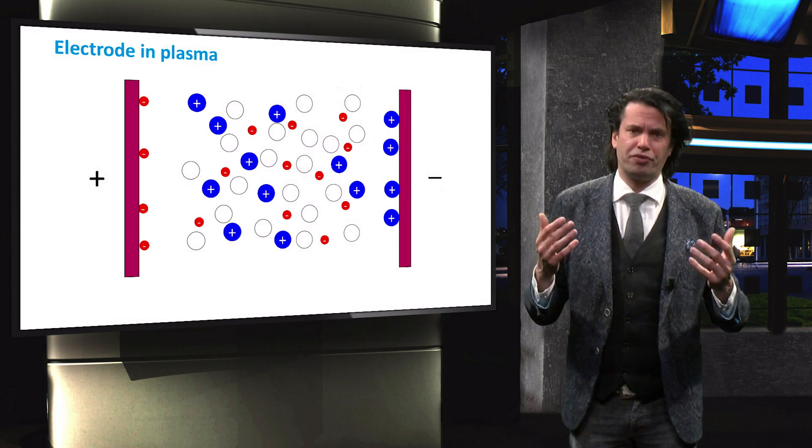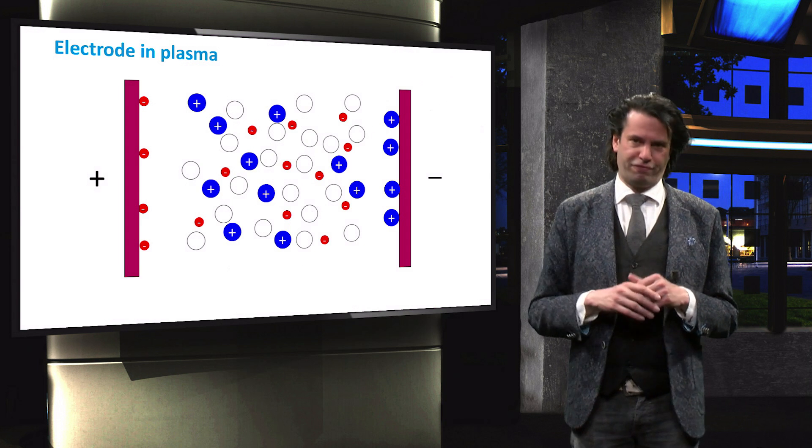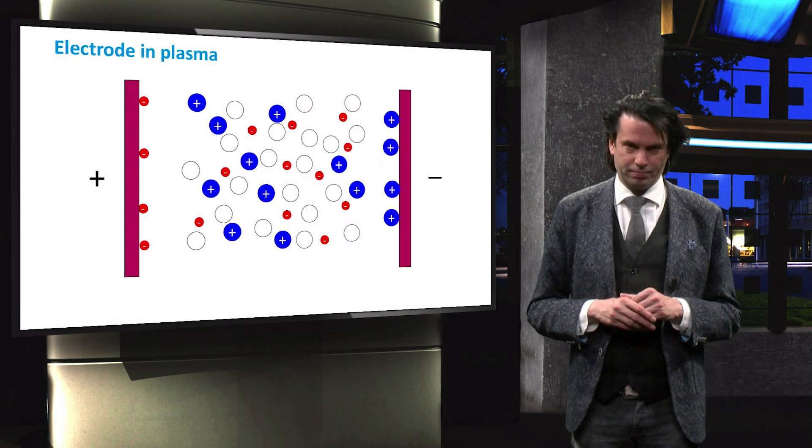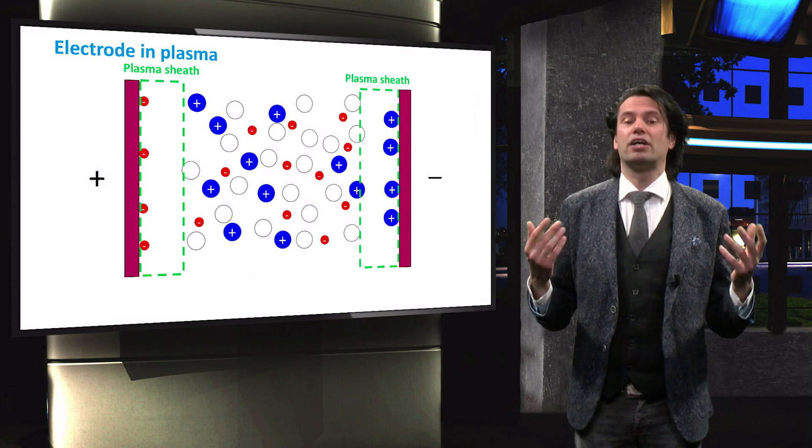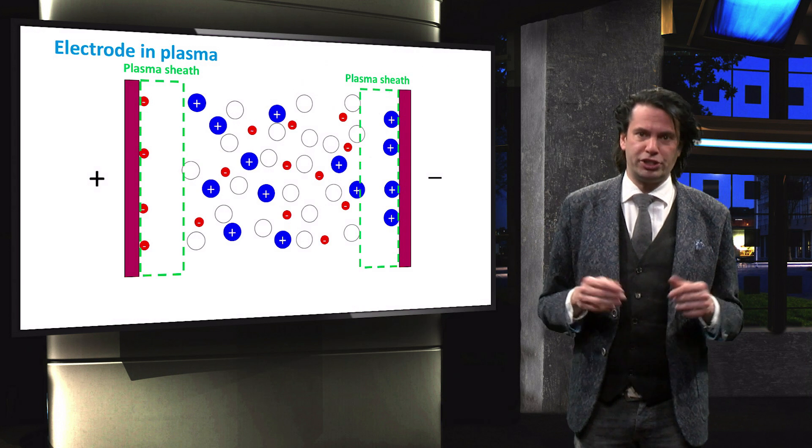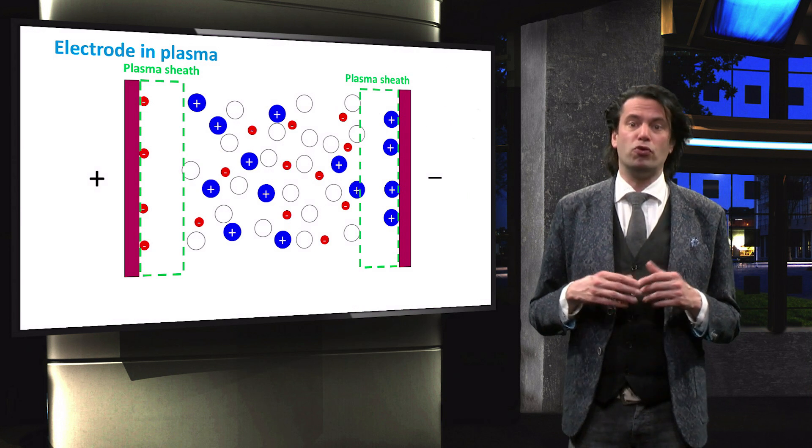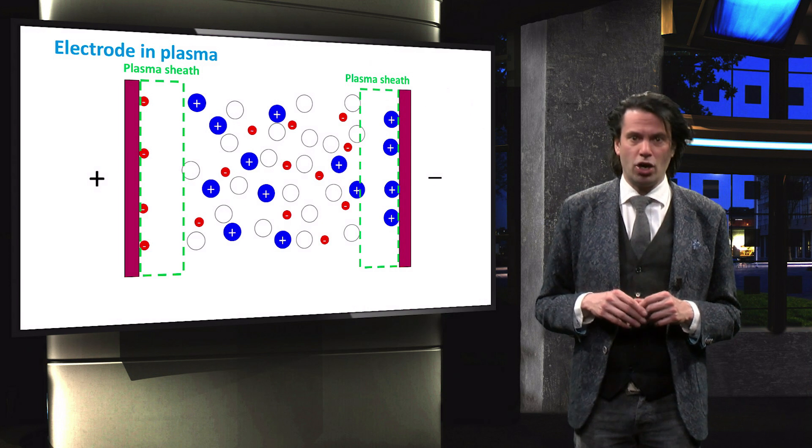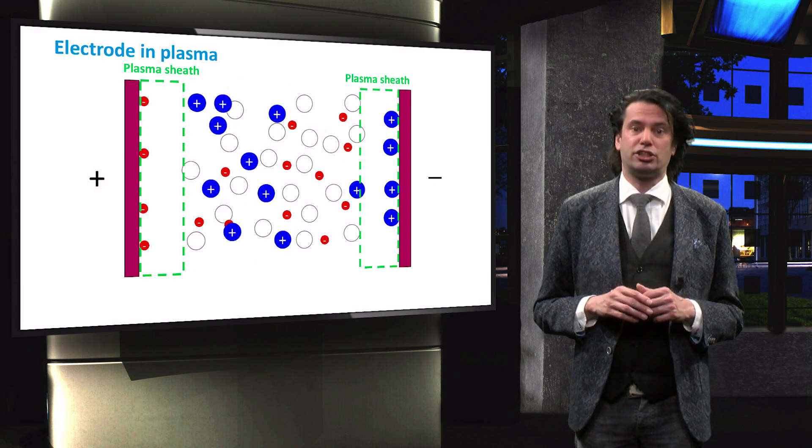Note that as we just learned, this figure is not physically correct. In fact, both electrodes will develop a sheath region and the electrons and ions will move randomly through the plasma, until they reach such a sheath region.